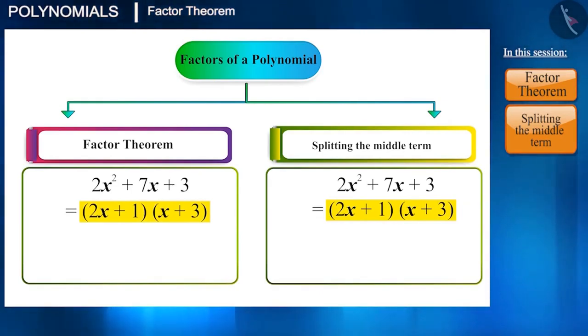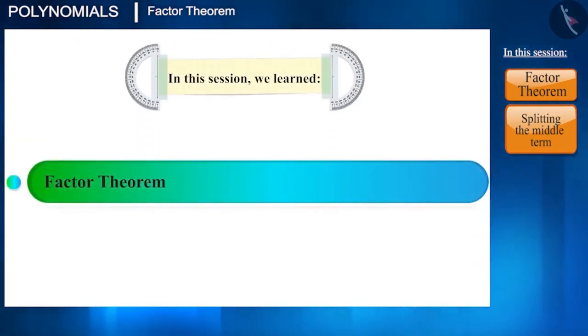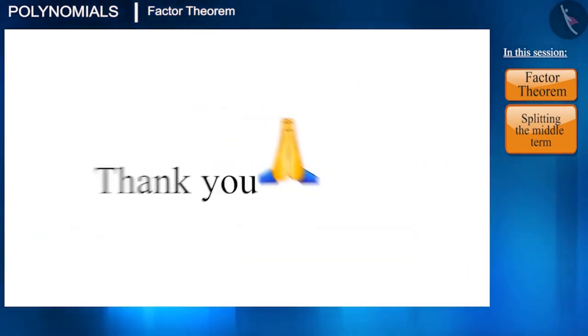You can check whether the polynomial is being reduced to 0 by finding the value of x from both the factors. Friends, that's all in this video. So, what did we learn in today's video? Factor theorem and splitting the middle term. Now, let's meet in the next video, where we will solve some questions based on this topic. Thank you.